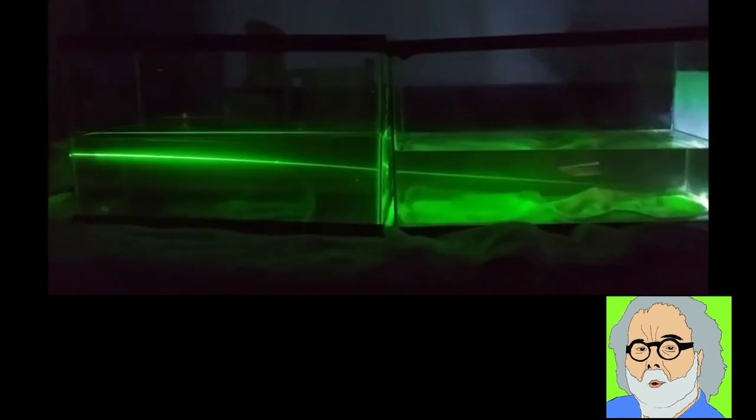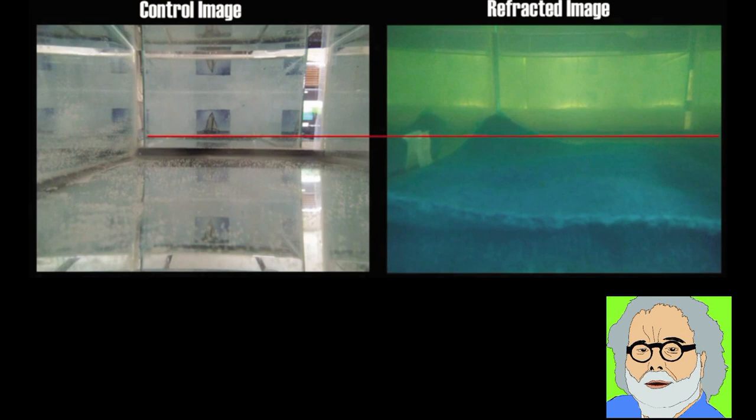First, he shines a laser through two fish tanks, first through clear water and then through water with a density gradient produced by a solution of sugar. He demonstrates that the light indeed bends downward and then he places a picture of a sailboat at the end of both fish tanks.